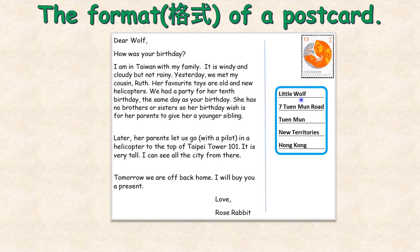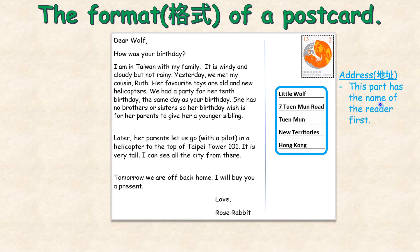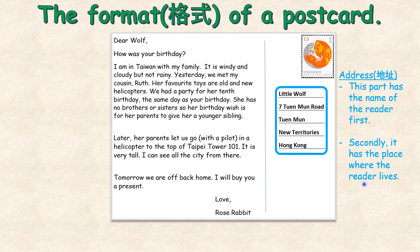Little Wolf, 7 Tun Mun Road, Tun Mun, New Territories, Hong Kong. This part of the postcard is called the address. This part has the name of the reader first — the person who the postcard is sent to is the reader, and that is Little Wolf. Secondly, it has the place where the reader lives, so Little Wolf lives at 7 Tun Mun Road, Tun Mun, New Territories, Hong Kong.